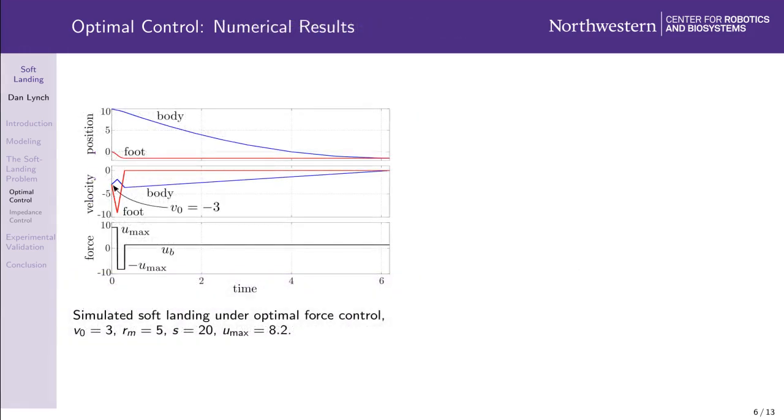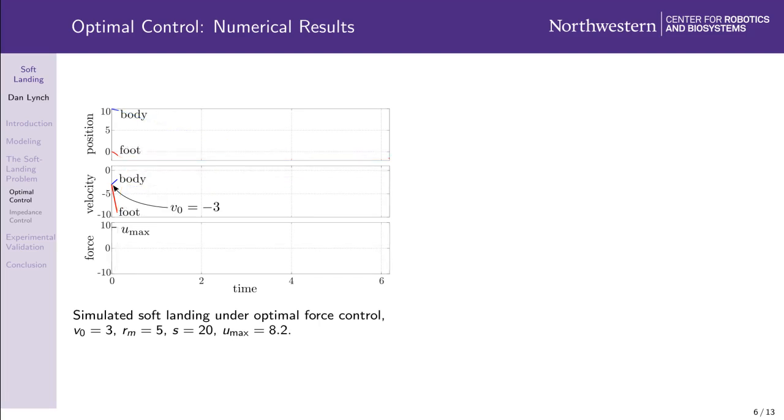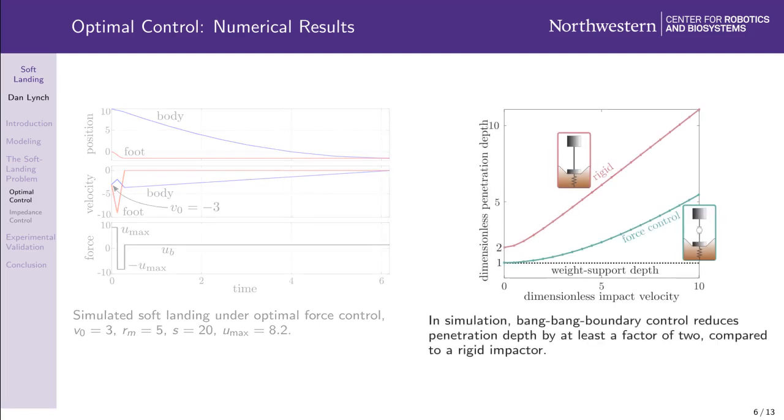An example soft landing trajectory that uses this three-phase force control policy is shown on the left. The mass ratio, stroke limit, and control bounds correspond to our experimental apparatus, which I'll discuss soon. In the first segment of this control policy, the robot drives the foot into the ground. In the second segment, the robot pulls up on the foot to stop at just the right depth. This is the minimum depth required to support the body arresting force, which is then applied in the third segment of this control policy. As shown on the right, bang-bang solutions to the soft landing problem reduce penetration depth by at least a factor of two compared to a rigid impactor. As impact velocity approaches zero, the optimal force control policy recovers the best-case dimensionless penetration depth of one, equivalent to the weight support depth.